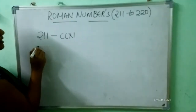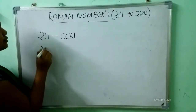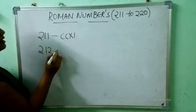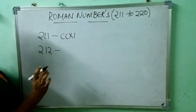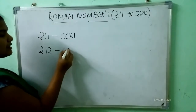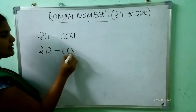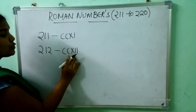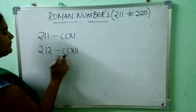Next, after 211 comes 212. So how to write 212 here? Double C is 200, X, double I is 12. So it means 212.